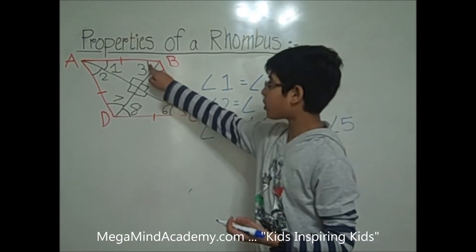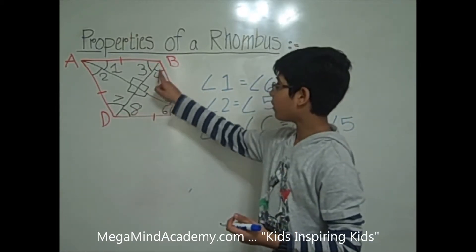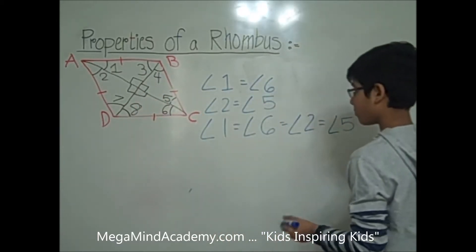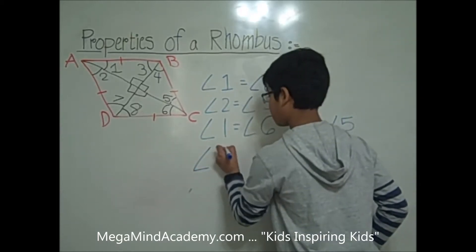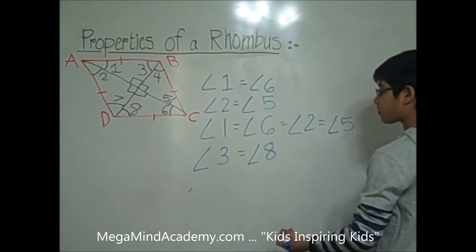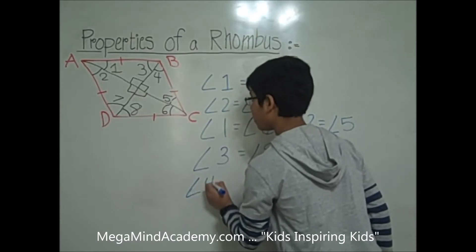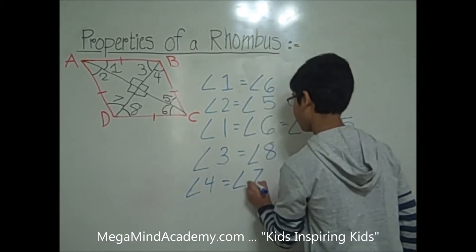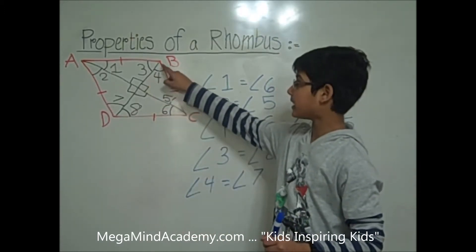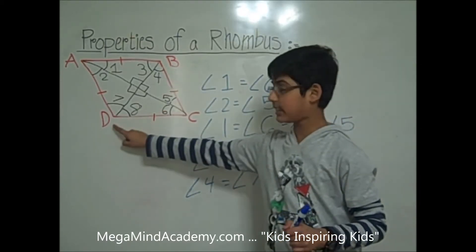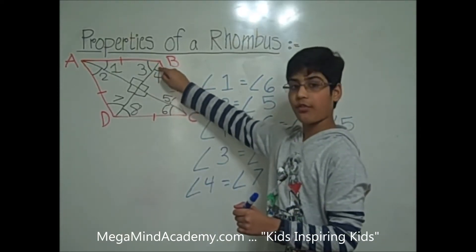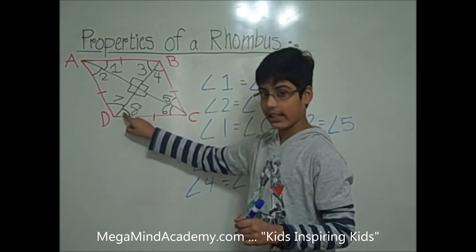Angle 3 is equal to angle 8, while angle 4 is equal to angle 7. Because this diagonal bisects vertex angles B and D into two equal parts, angle 3 equals angle 4, and angle 7 equals angle 8. So angle 3 equals angle 8, angle 3 also equals angle 7, and angle 4 also equals angle 8. Therefore, angle 3 equals angle 8, which equals angle 7, which equals angle 4.